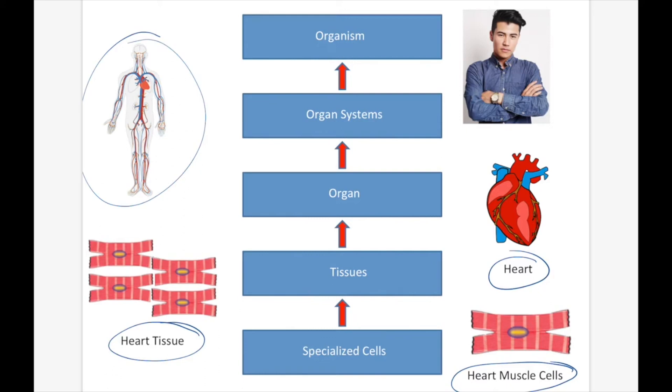If you combine the circulatory system, the digestive system, the nervous system, and all the different systems together, you'll get our organism at the top of our hierarchy.